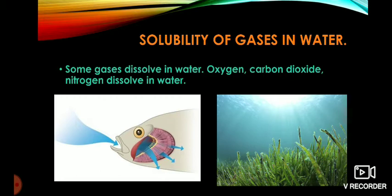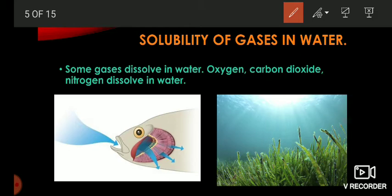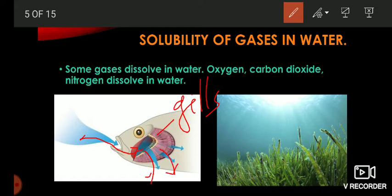With the help of the oxygen that dissolves in water, aquatic animals like fish, octopus, whale, dolphin, etc. can respire. They have special organs which help them to take out oxygen from the water. Fish, for example, use gills to separate oxygen from the water — water is taken in by the mouth of the fish, and with the help of gills they sieve the oxygen and send it to other body parts, while excess water passes through an opening. The name of this special organ is called gills.